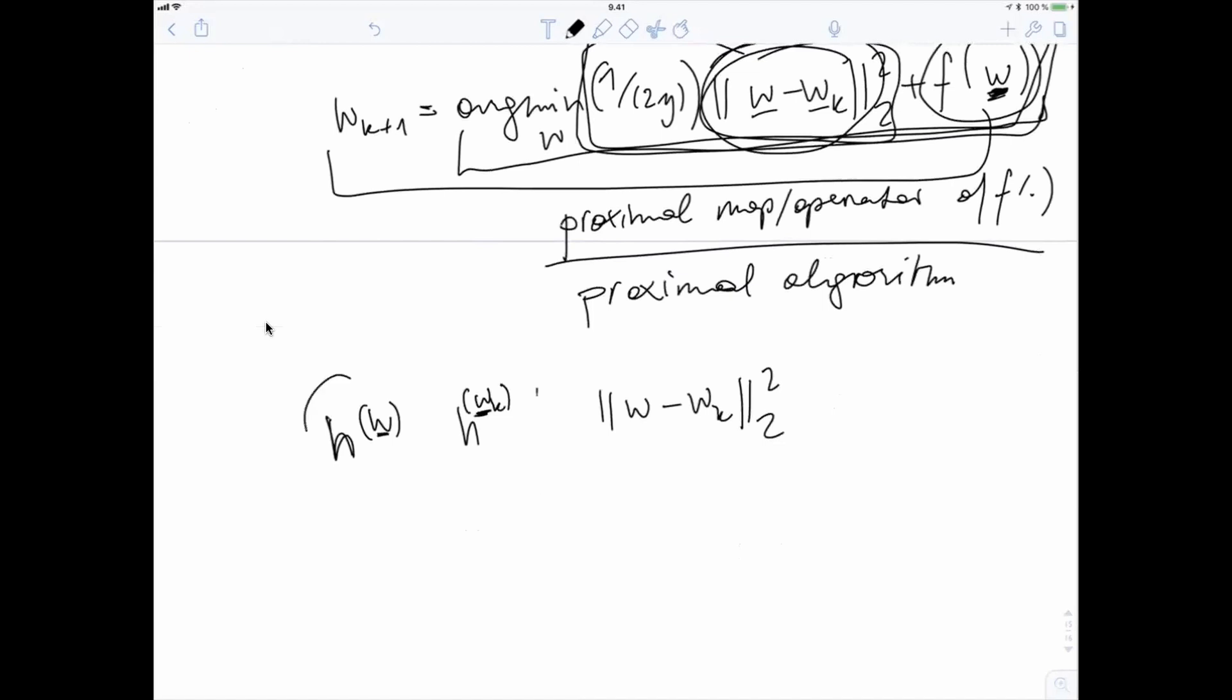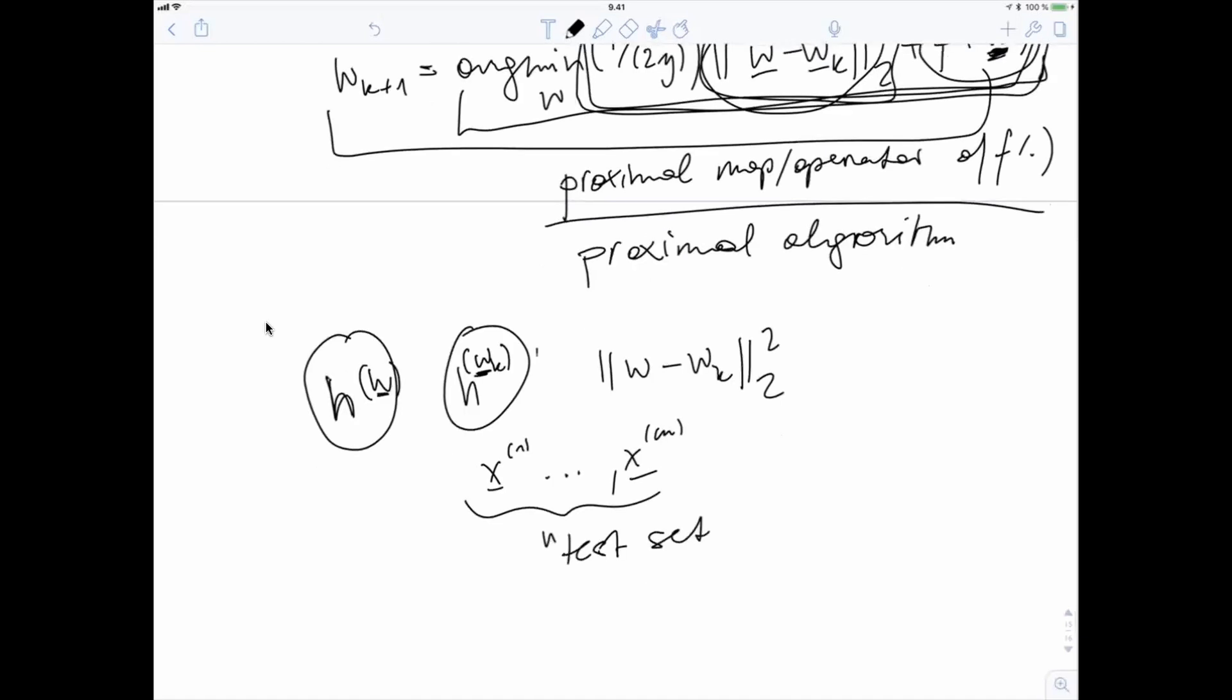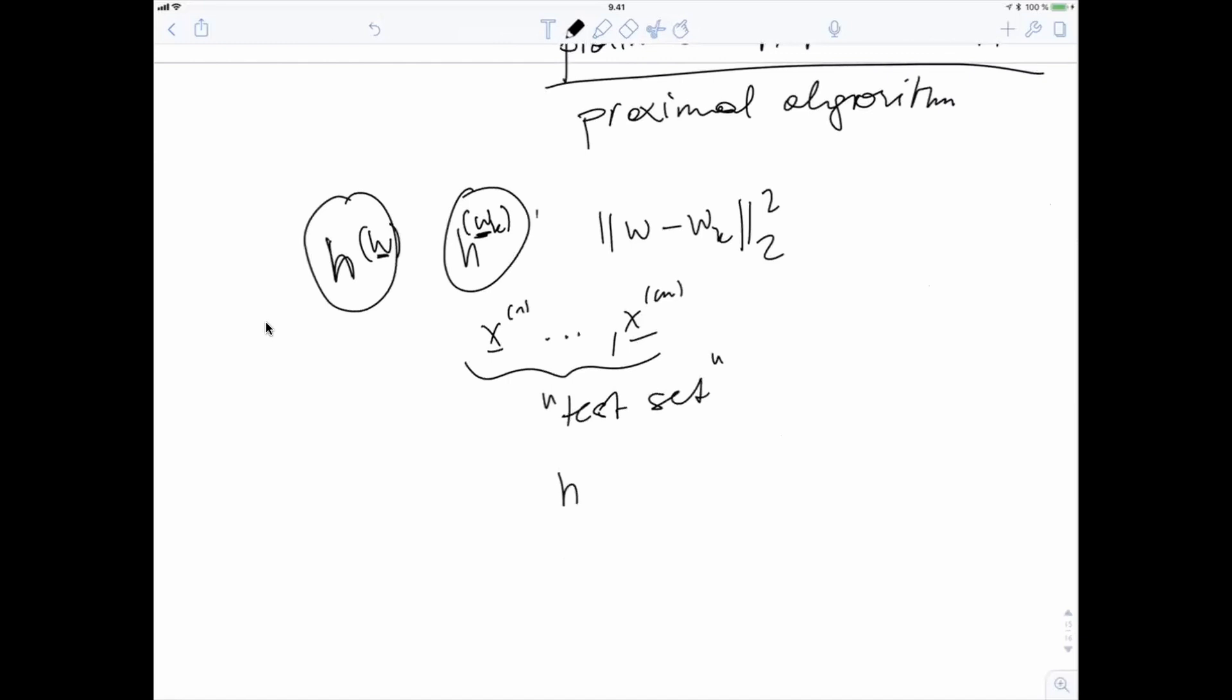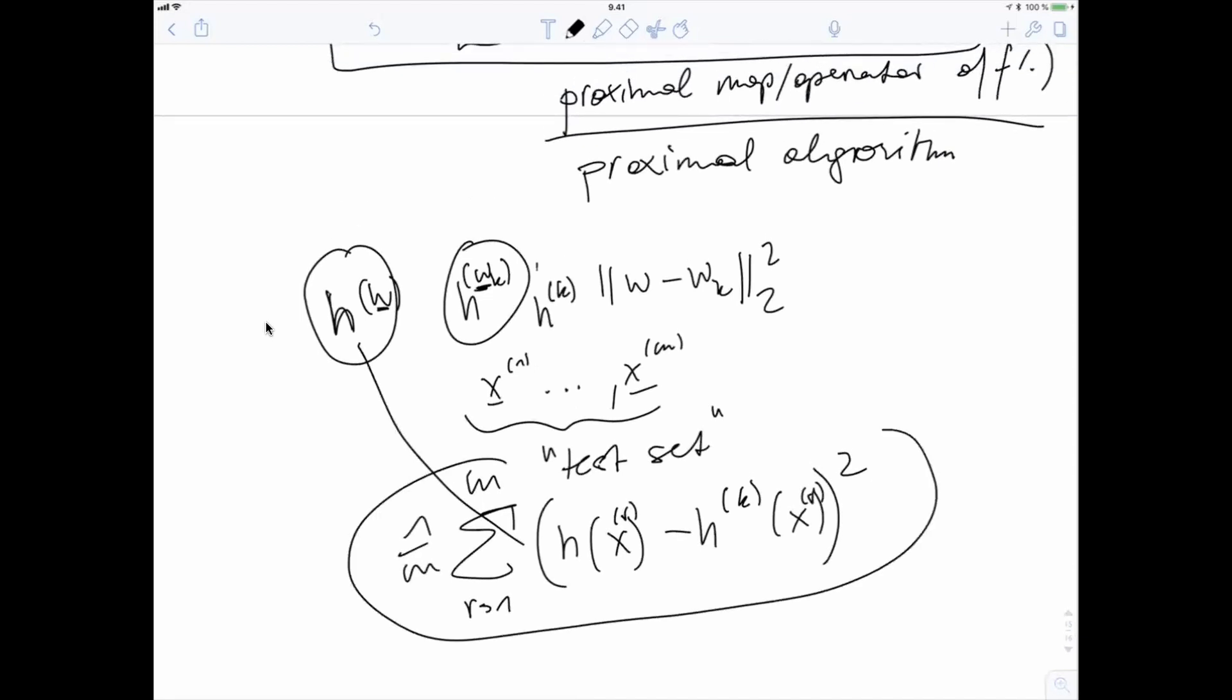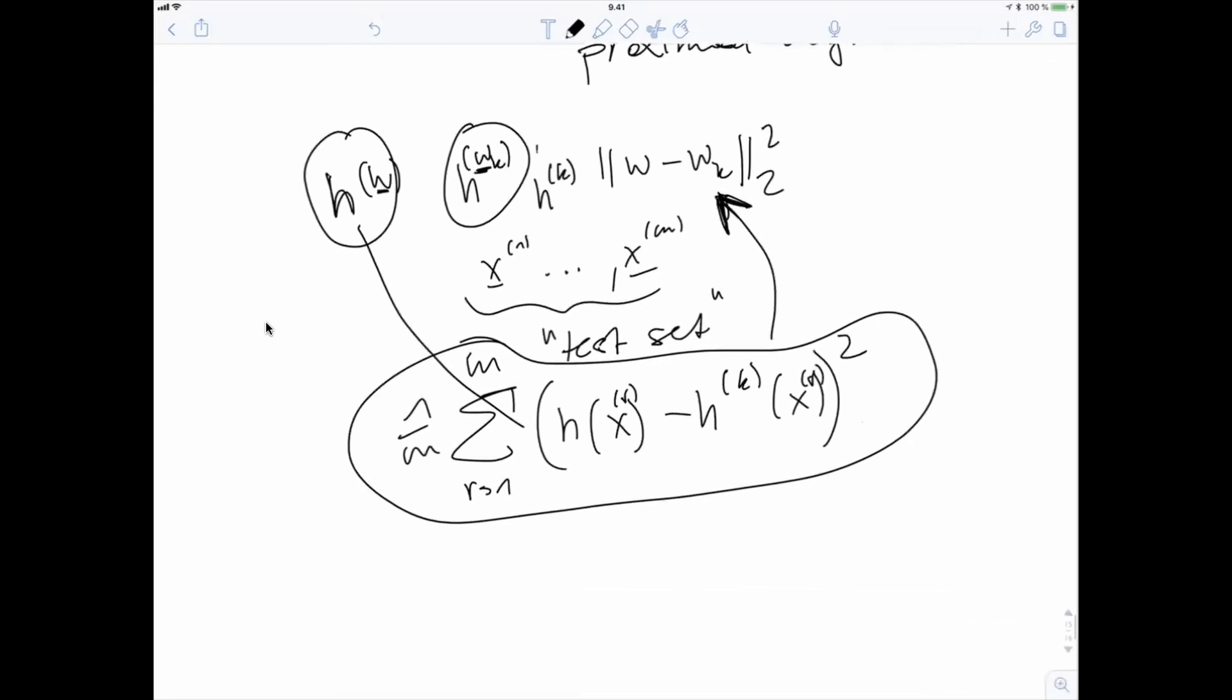And one idea is to compare, so how can we compare two hypothesis maps without comparing their parameters? Well, what we could do is we could compare them on a training set of feature vectors or a test set. Let's call this test set. And we compare those two hypothesis maps. So let's call this H and this here is then H superscript K, compare these two hypothesis maps on their predictions on a test set. They typically deliver different predictions and we can compute the squared difference between them and average them over the test set, so over M data points. And we use this discrepancy on the test set as a replacement for this measure of distance between hypothesis maps.